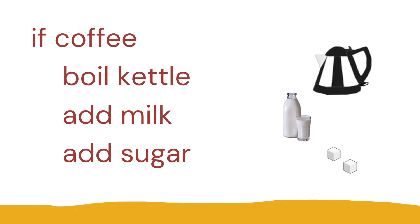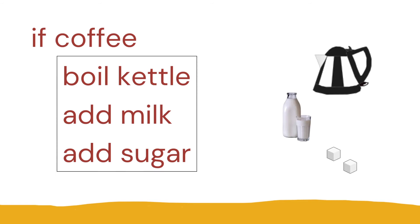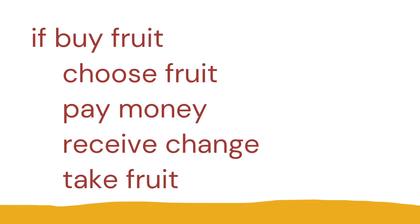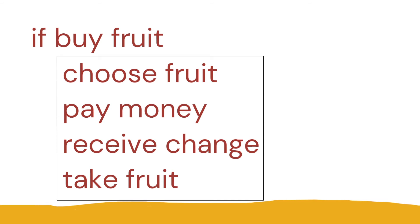Here we have: if coffee — boil kettle, add milk, add sugar. We can see three lines of code that are part of the if statement, all indented. Here's another example: if buy fruit — choose fruit, pay money, receive change, take fruit. That's our block of code and you can see it's all indented.